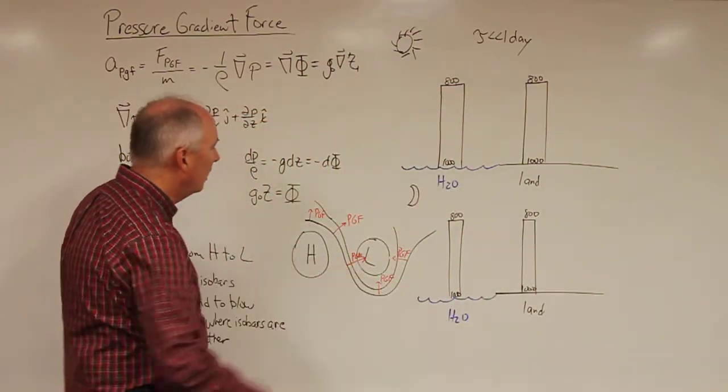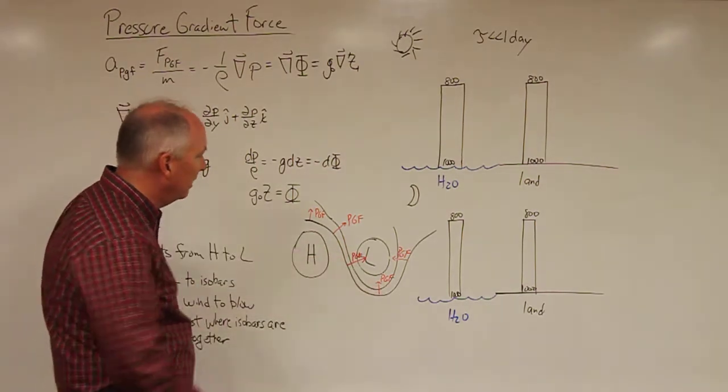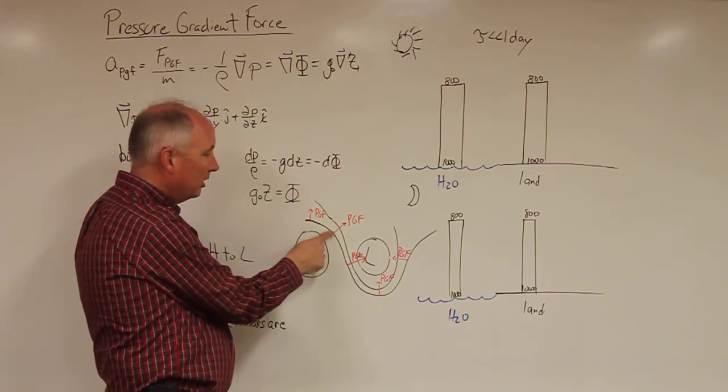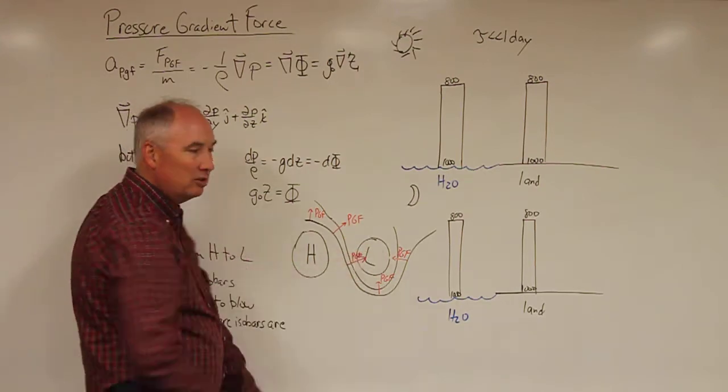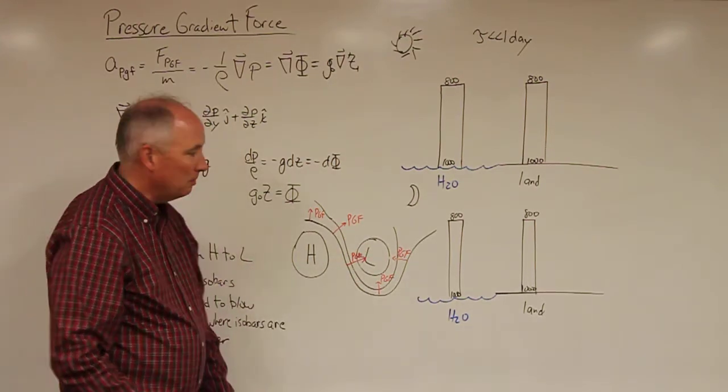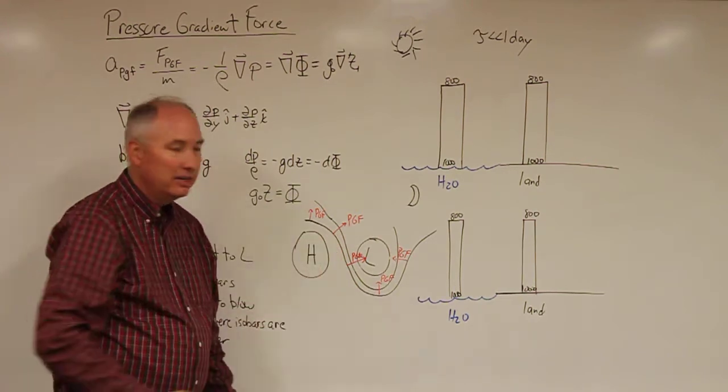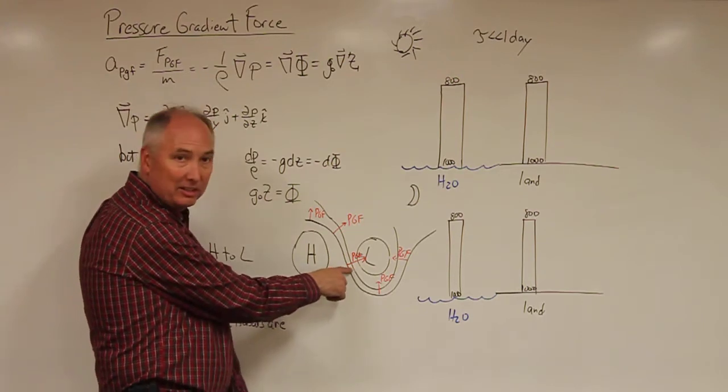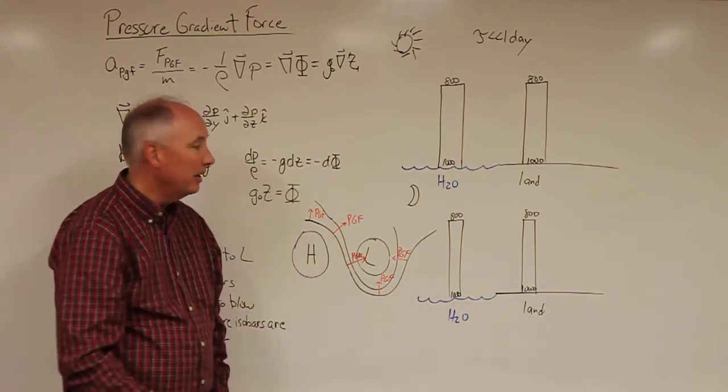So here's an example of a high and low pressure system with isobars in between. And we have here the pressure gradient force is always essentially at a right angle or perpendicular to the isobars. And the strength of the pressure gradient force is proportional to the gradient or how tightly packed the isobars are. So the strongest winds here would be at this location right here where the isobars are closest together and the pressure gradient is largest.